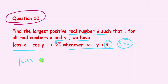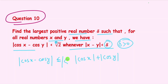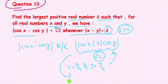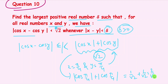We start with the inequality: mod of cos x minus cos y is less than or equal to mod of cos x plus mod of cos y. Now if we equate this to root 2, and choose x equal to pi by 4 and y equal to pi by 4, then we get mod cos(pi/4) plus mod cos(pi/4), which equals 1/root 2 plus 1/root 2, equal to 2/root 2, which equals root 2. So for this choice of x and y the inequality holds.